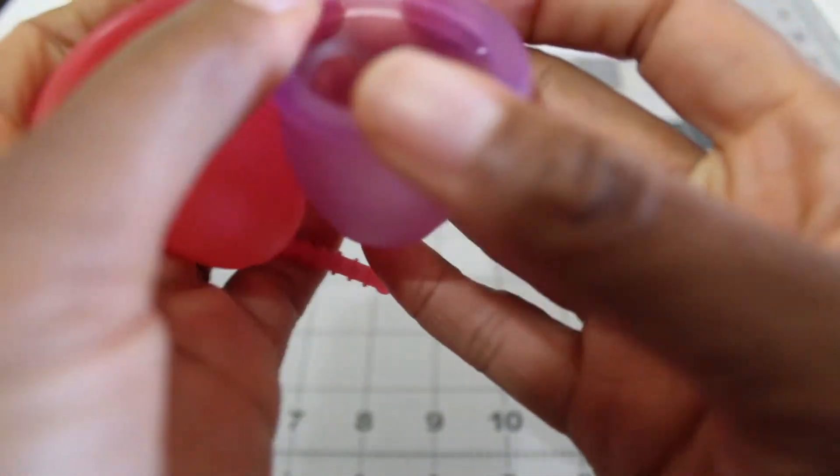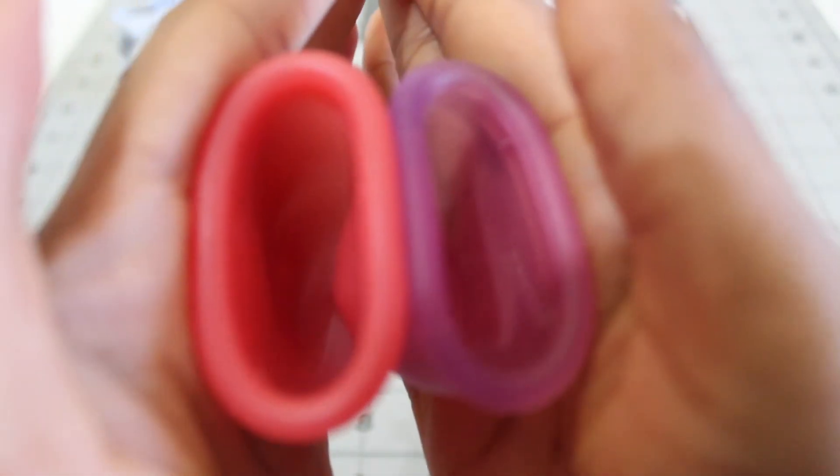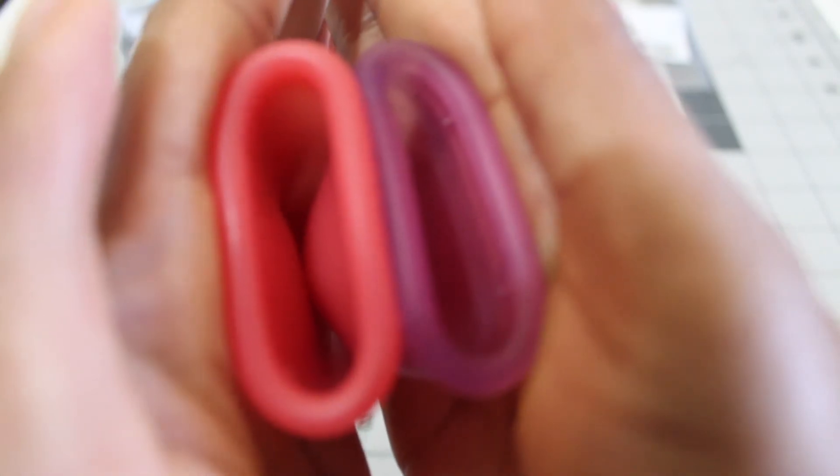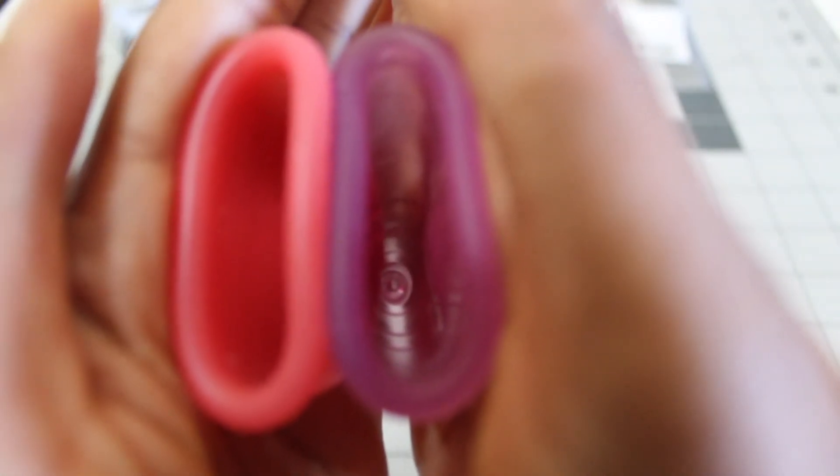I'm going to switch hands. The Ruby is on my right now and Isabel is on my left. See the Isabel gets squished pretty quickly. The Ruby is a little bit still open.